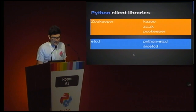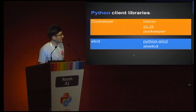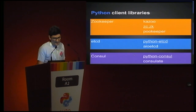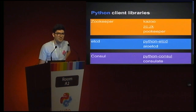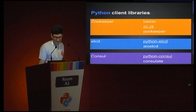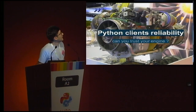For ETCD we have the standard python-etcd library, which is pretty good, and another for AsyncIO. For Consul there's Consulate and python-consul. We'll use python-consul, which is more documented and more active. Last year it was the contrary, but this year python-consul is very nicely implemented.